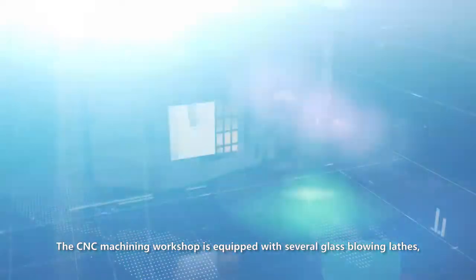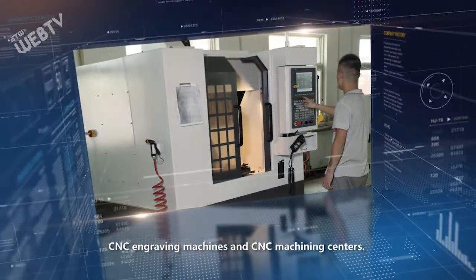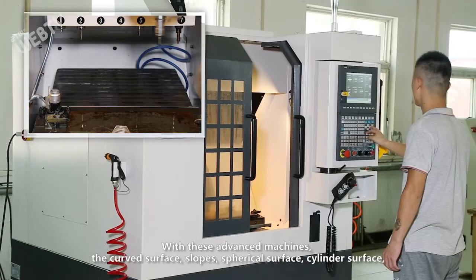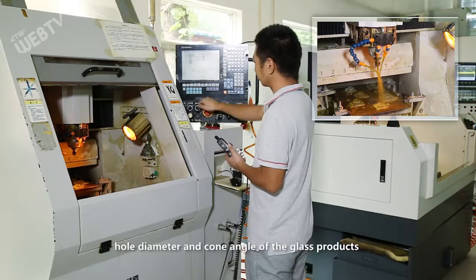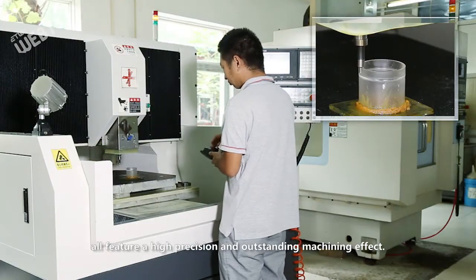The CNC machining workshop is equipped with several glass blowing lathes, CNC engraving machines, and CNC machining centers. With these advanced machines, curved surface, slopes, spherical surface, cylinder surface, full diameter, and cone angle of the glass products all feature high precision and outstanding machining effect.